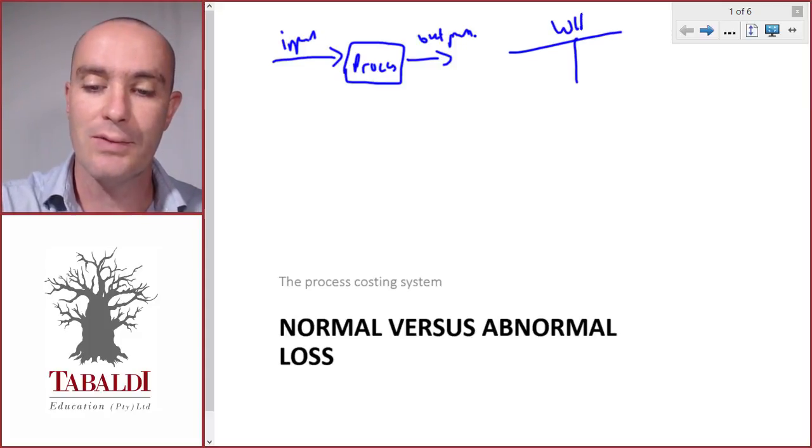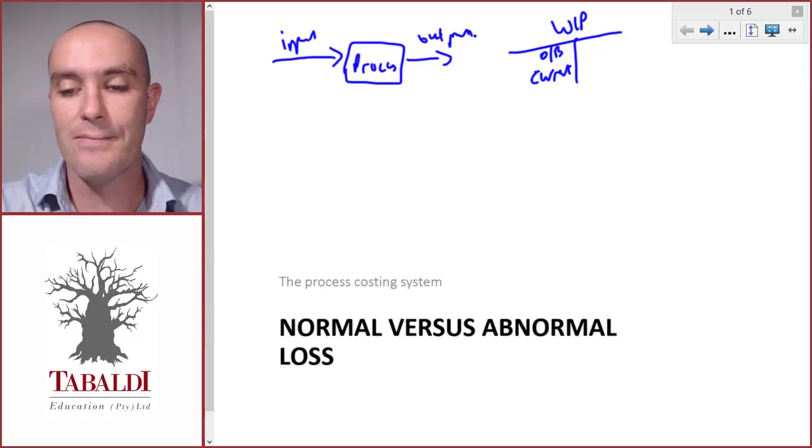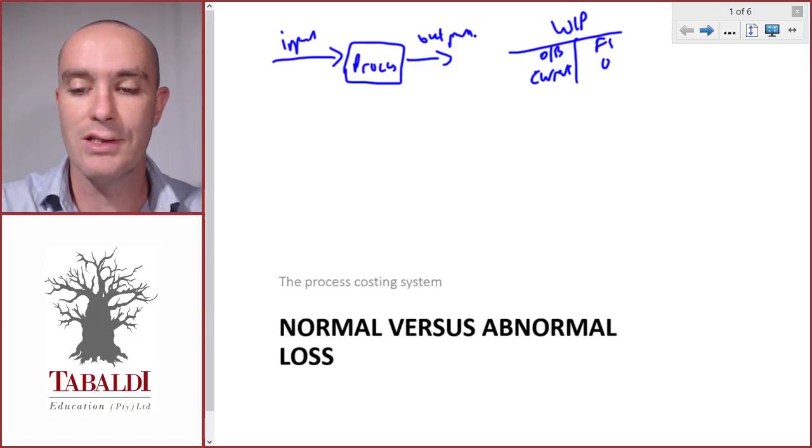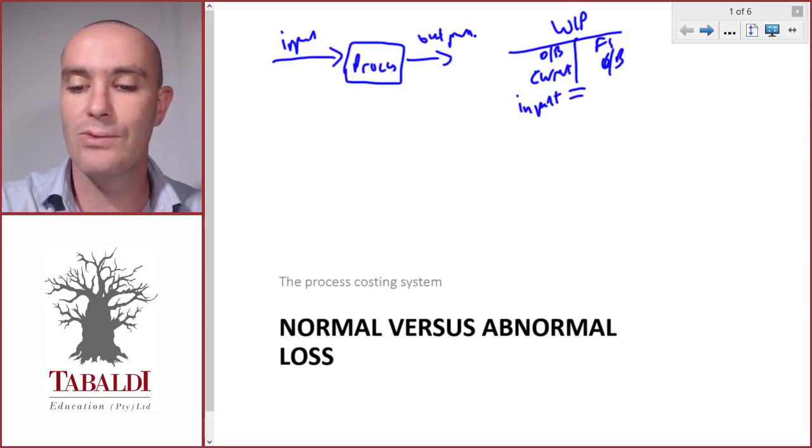If you think of a T account, that's our work in process account. Our inputs is the opening work in process balance and the cost that we incur in the current period. And then our outputs would be our finished goods and our closing balance of work in process. And the inputs on the left hand side or the debit side will always equal the outputs.